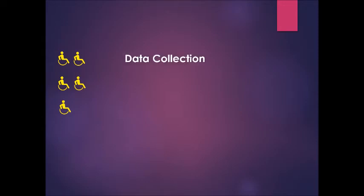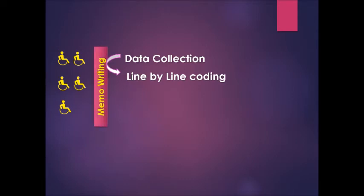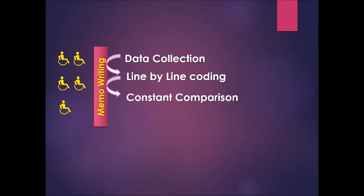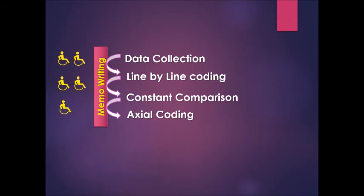So here we have a purposefully selected sample. Then we start data collection through different tools such as a semi-structured interview guide. After data collection, we do line-by-line coding that helps to understand what is happening in the data. While doing line-by-line coding, you may have several questions or reflections, so start writing your memo and record everything that can help you to practically understand the data. After line-by-line coding, you do constant comparison across all coded interview transcripts — and during constant comparison, don't forget to write your memo. After constant comparison, do axial coding, which will give you theoretical understanding inside the data and provide guidelines for the next sample.